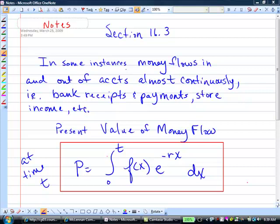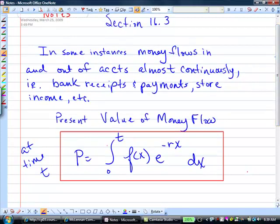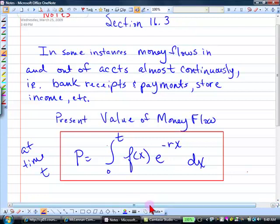There's always this flow. If you're in a store, you're paying in money, they're getting rid of merchandise. There's always this continuous flow. So there is a formula for the present value of money flow, and this is at time t. The present value is the integral from zero to the time t of f of x, whatever the function is, times e raised to the negative rx dx.